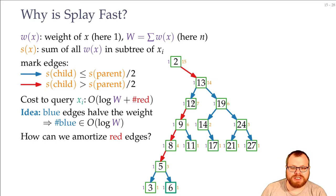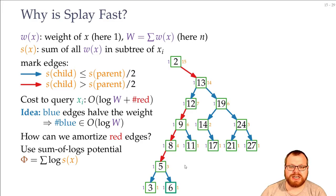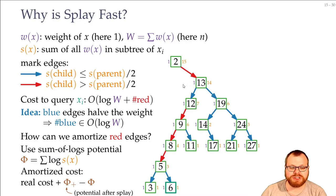So we want to amortize the red edges. That means if we take a long time, then we do a lot of work in balancing the tree, and later things will be much faster. And to analyze that, we use the potential method. So we use some potential function. Here we use the sum of logs potential. So we sum up the logarithm of all these orange numbers, and that tells us the potential of the tree. And the amortized cost of a function is the real cost, plus the potential after the function, minus the potential before.